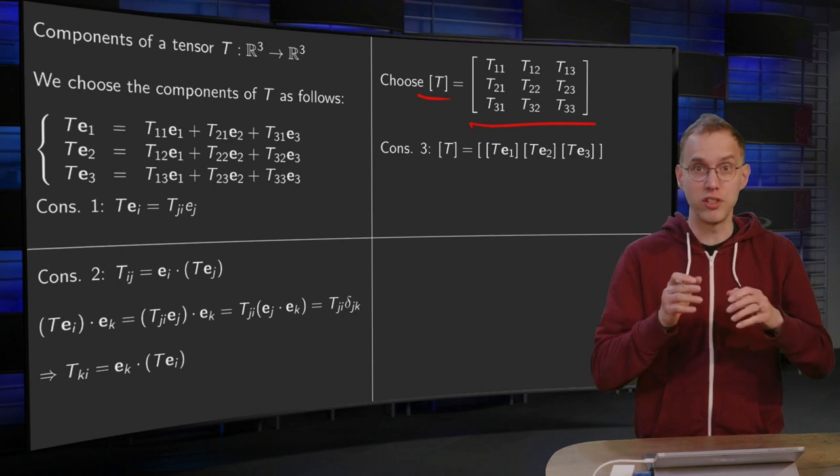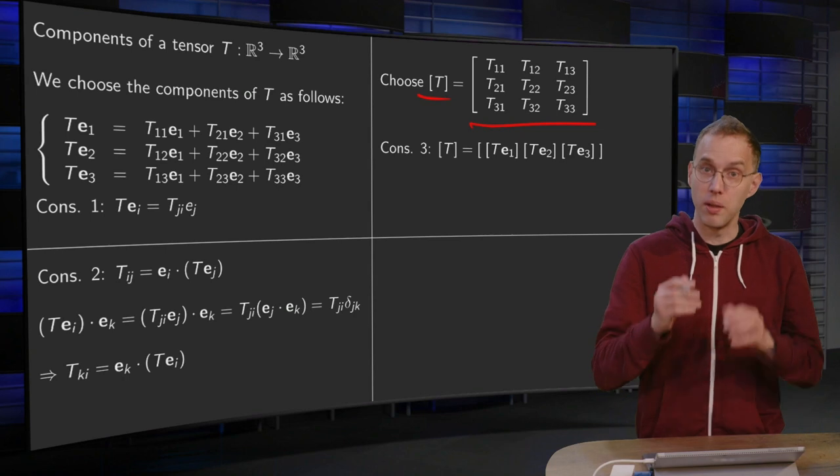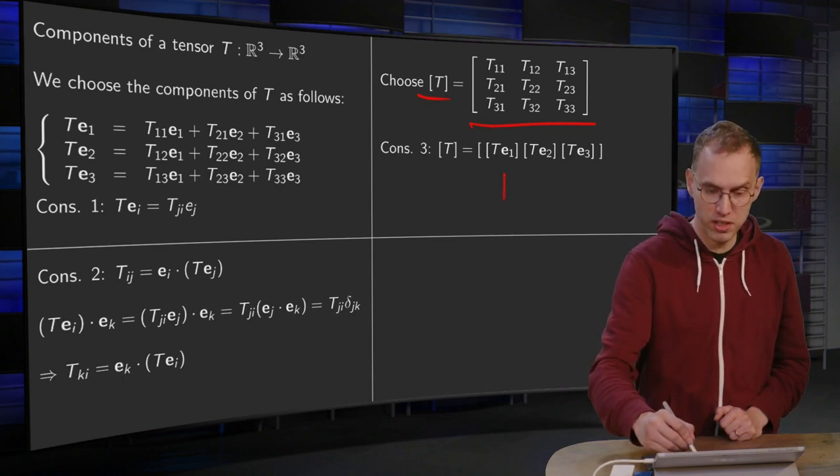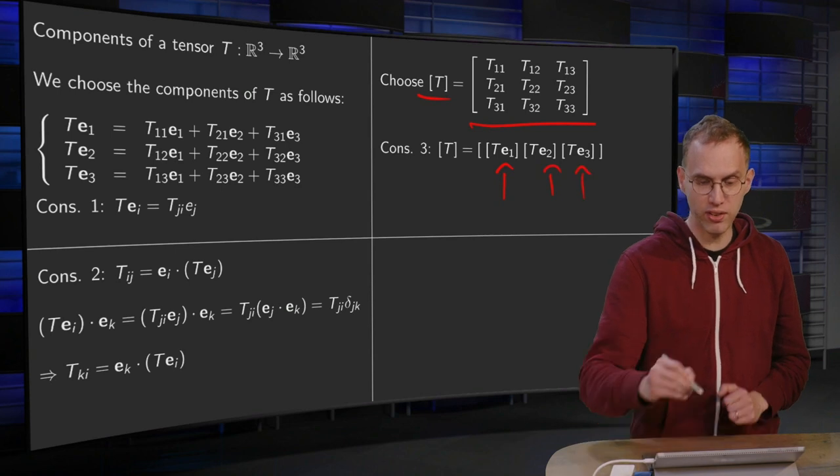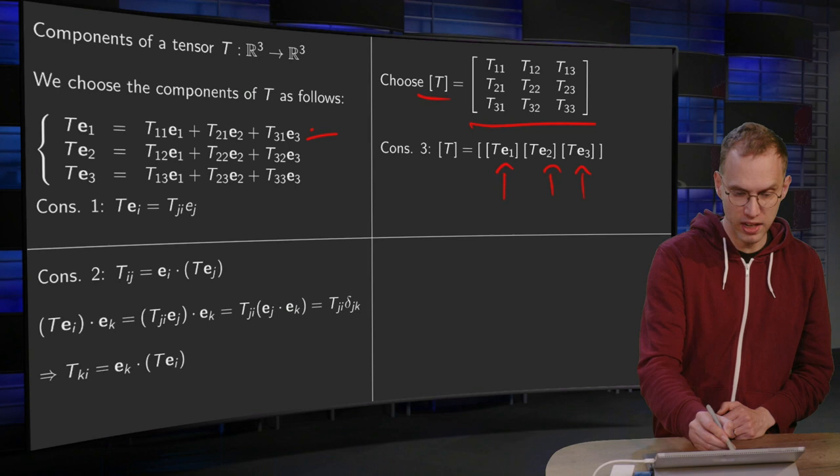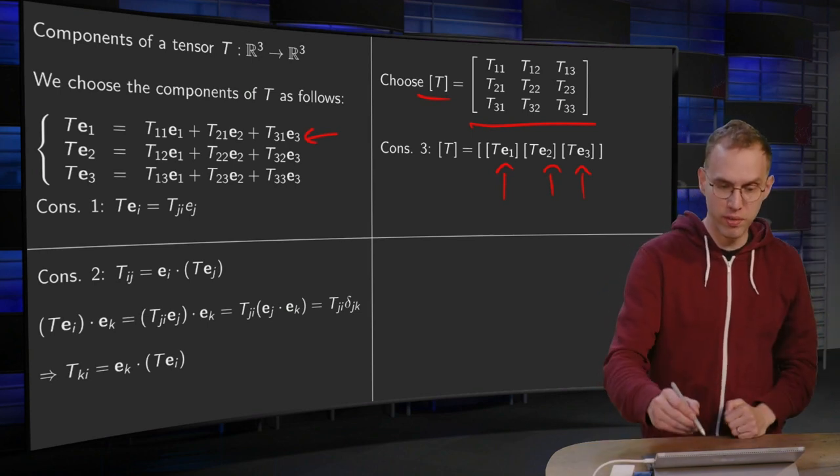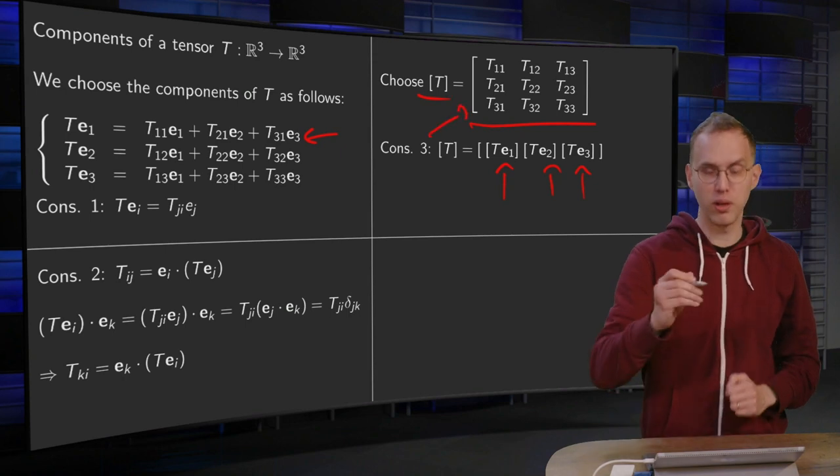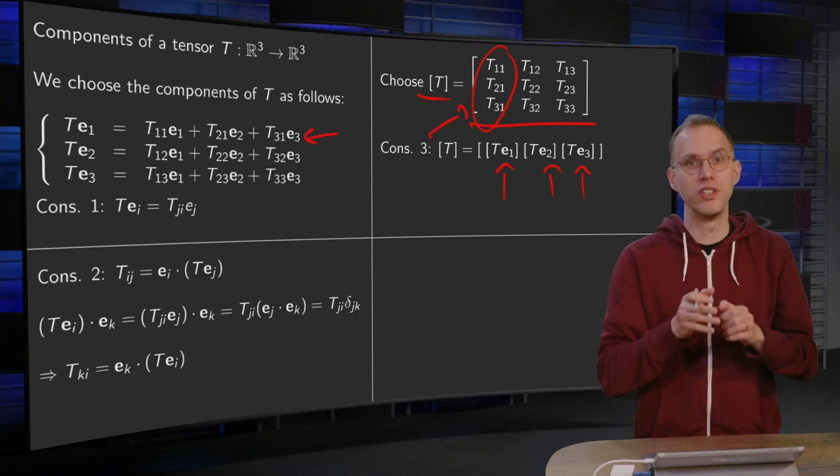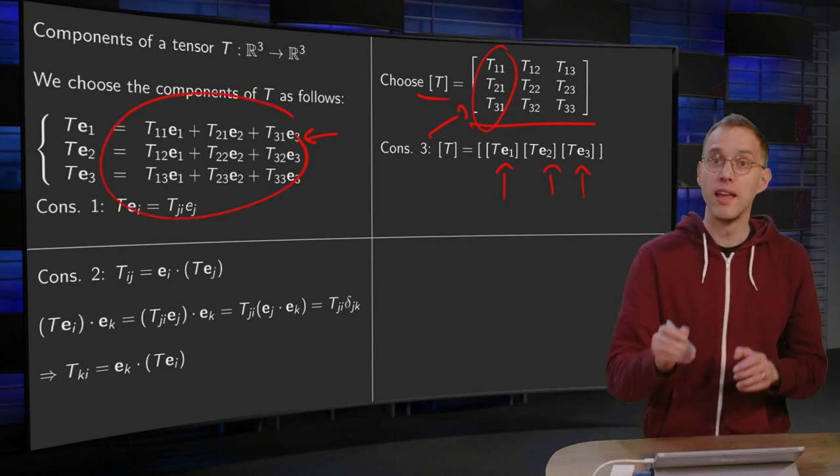And then a consequence of putting the numbers like this in the matrix is of course that the matrix of T consists of columns T of E1, T of E2, and T of E3, because our T of E1, here it is, has its components T11, T21, T31, which you put as first column over there in your matrix.